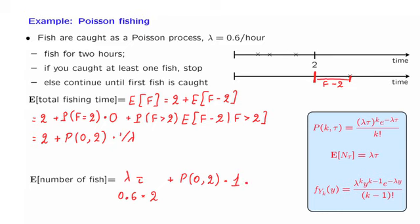Notice that in answering both of these last questions, we used the divide and conquer strategy twice. We first divided the time horizon into two pieces and dealt separately with each piece. Then, in order to deal with the time after two, we used divide and conquer across the two different scenarios, applying the total expectation theorem.